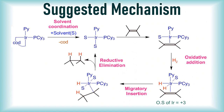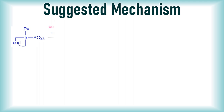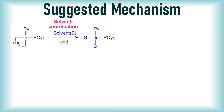Here is a detailed breakdown of the suggested mechanism. Initially, the solvent molecules interact with the iridium metal center either by expanding the coordination sphere or leading to the detachment of a COD ligand. This step prepares the catalyst by creating an active site for subsequent reactions.